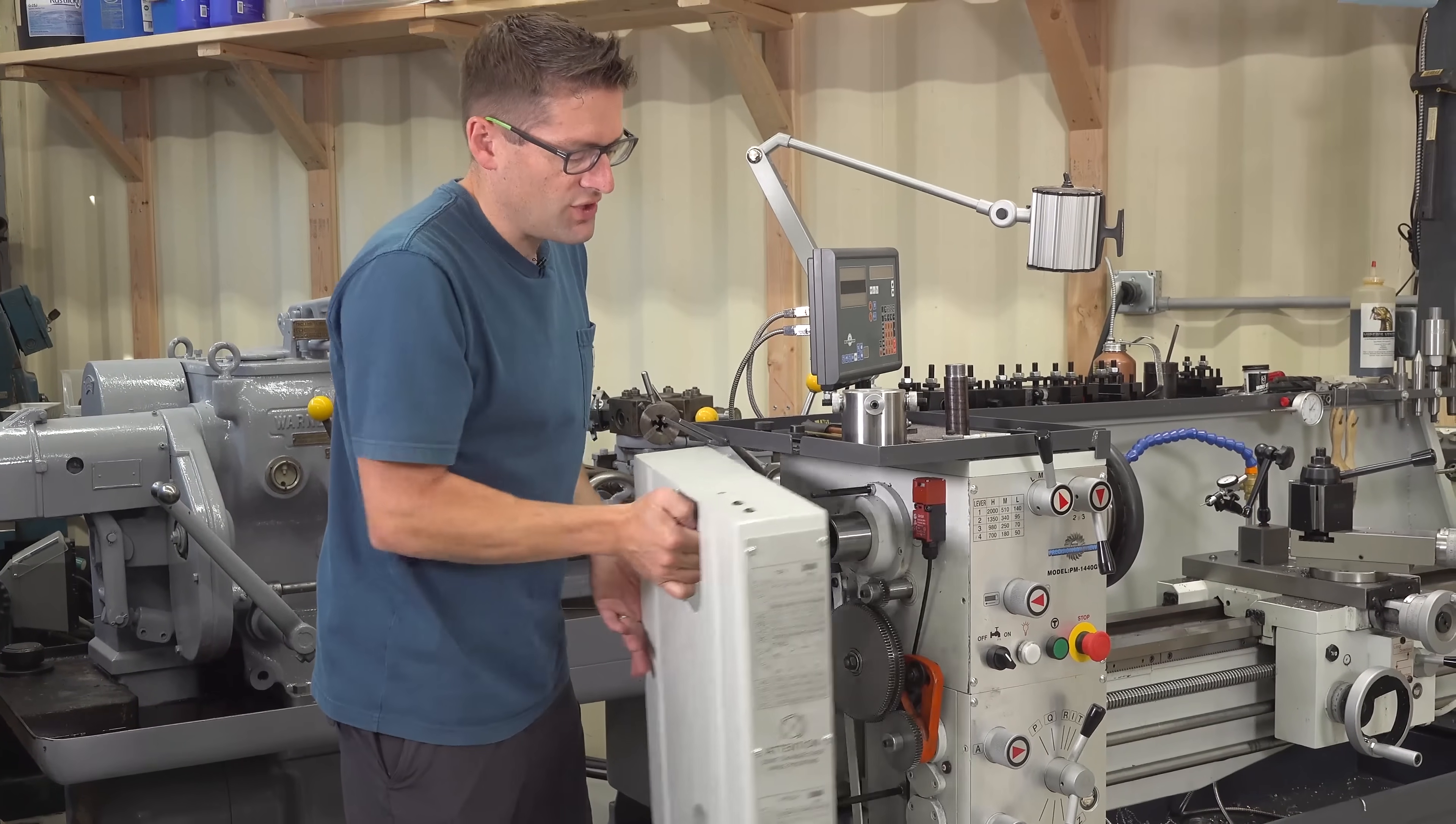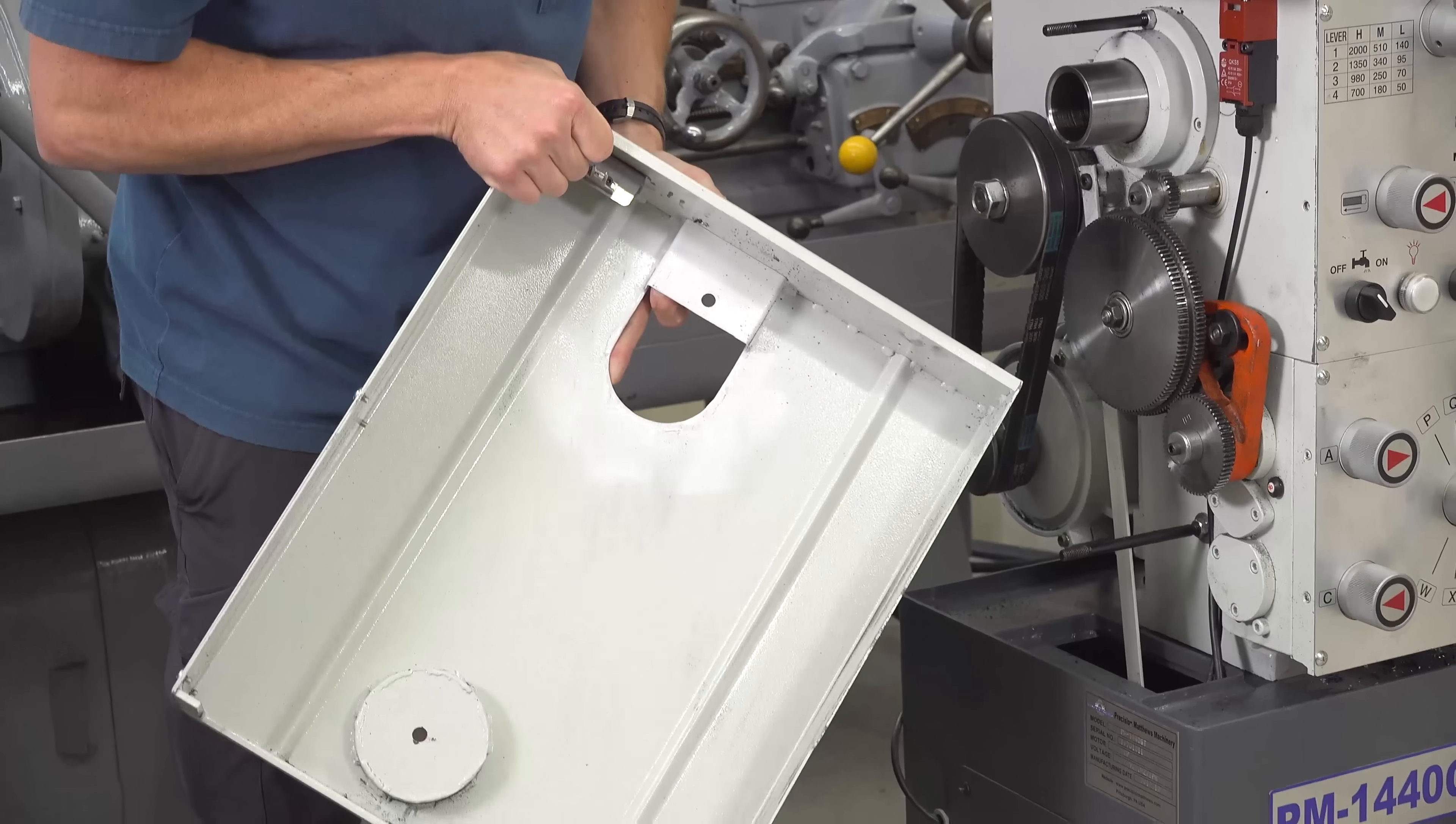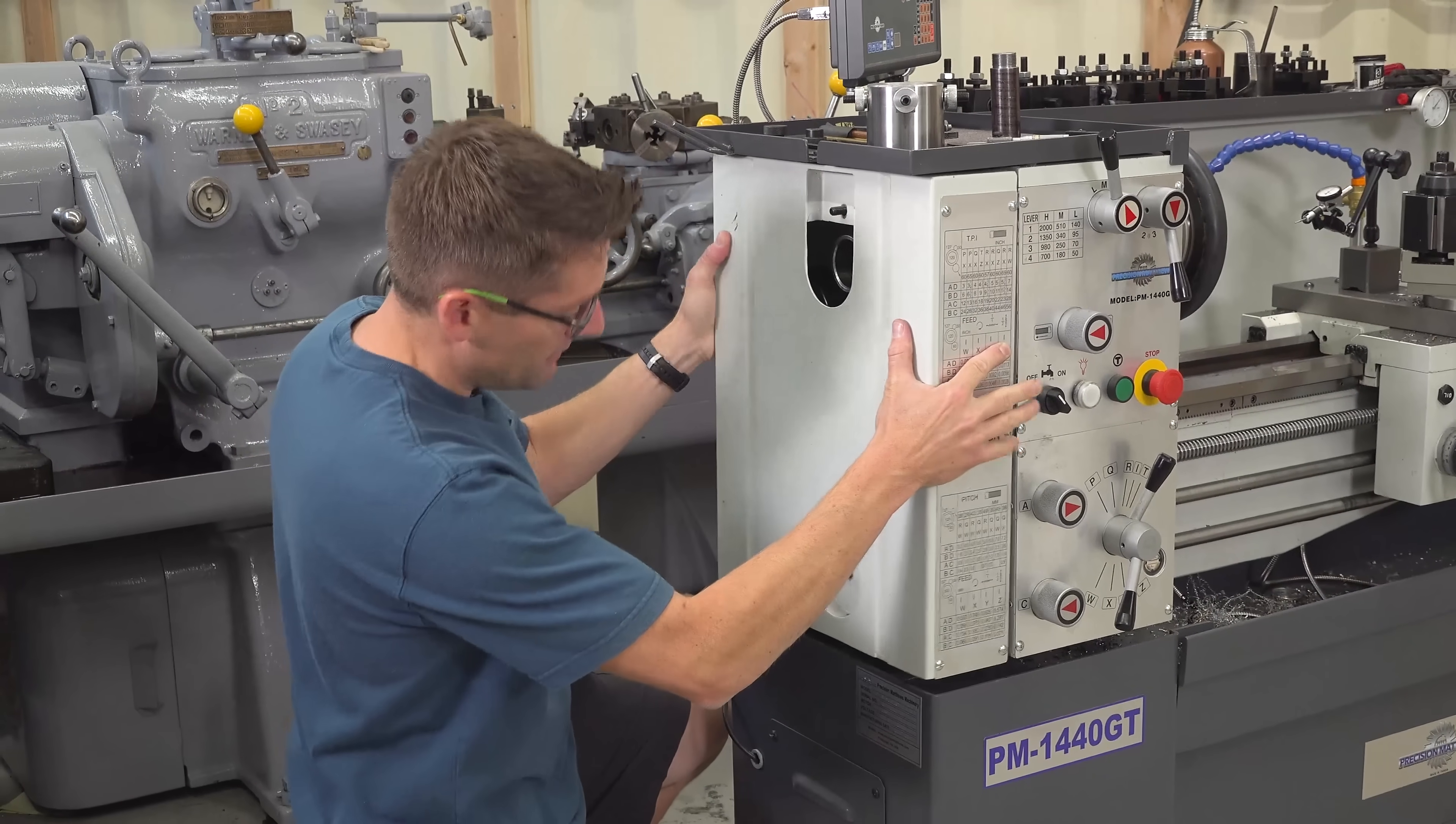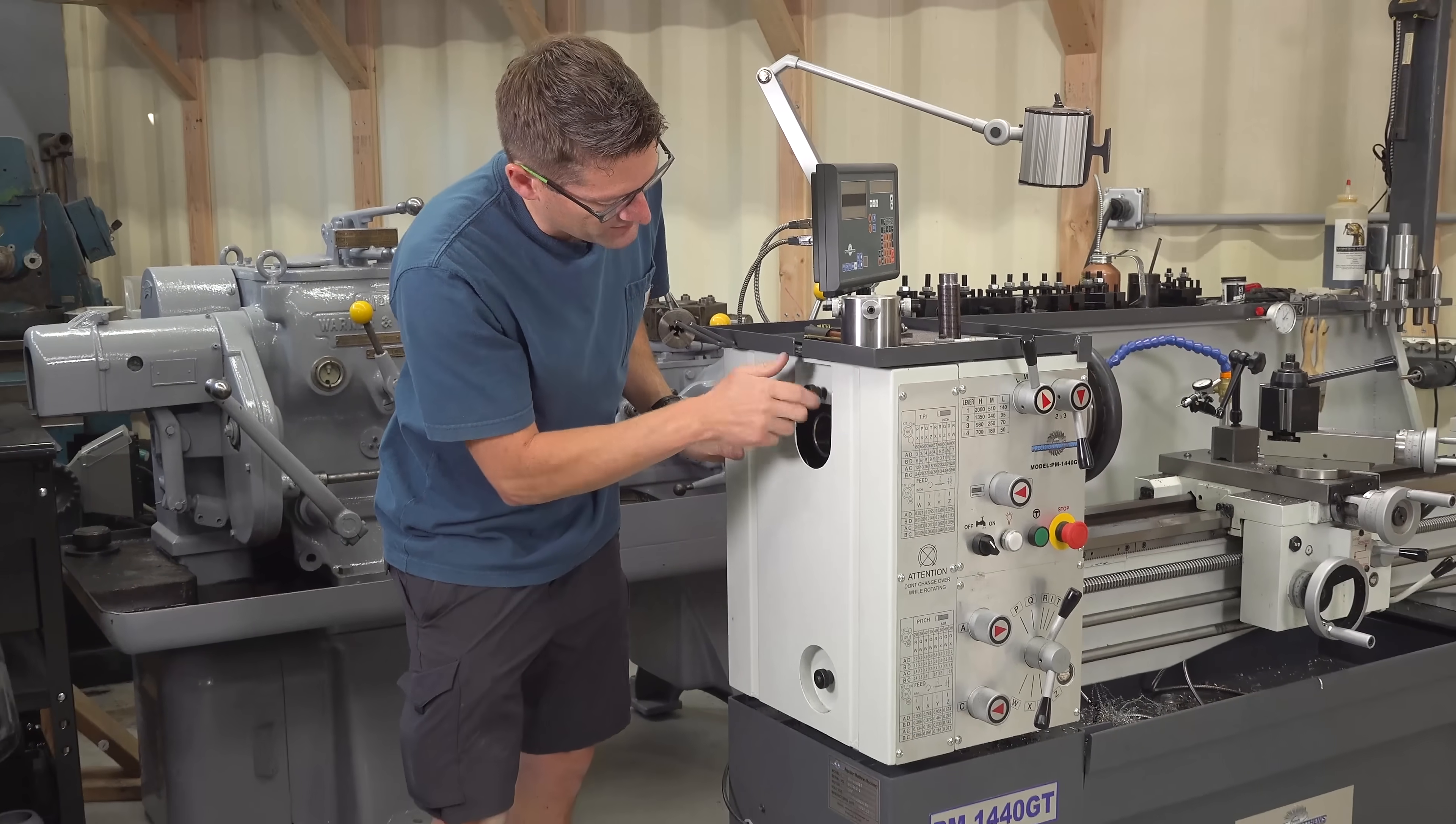So the Precision Matthews PM 1440 GT has sheet metal all in here when you get the lathe from the factory. And all I had to really do was do a little bit of cutting and remove a band of metal right here to provide enough clearance. And you'll see even with my tray up top this comes together real easily and is not a problem to deal with. So I really like the way that all of this came together.